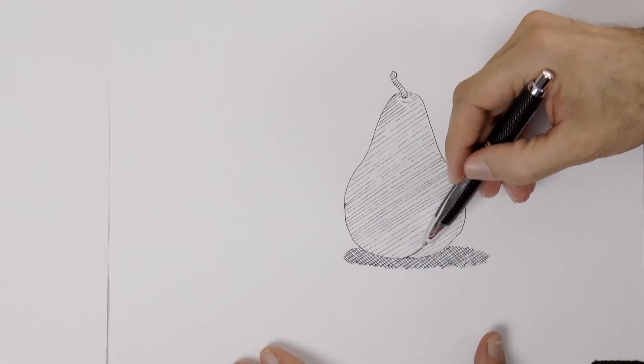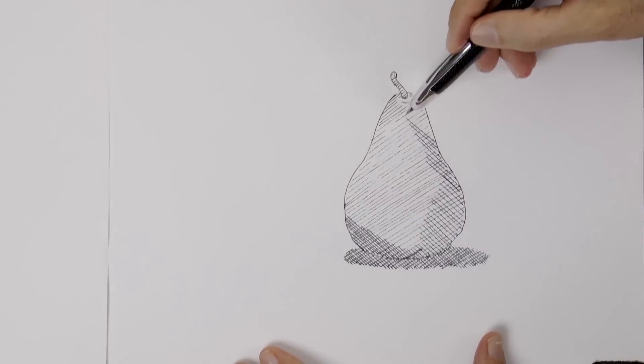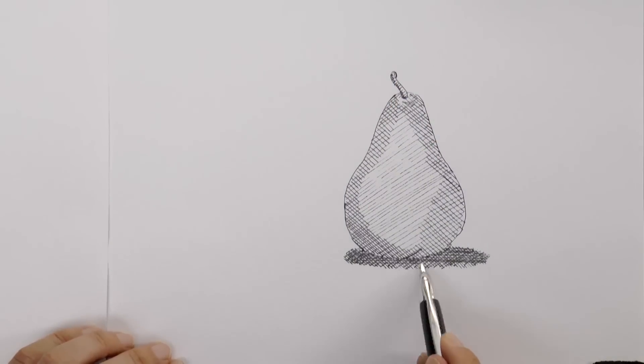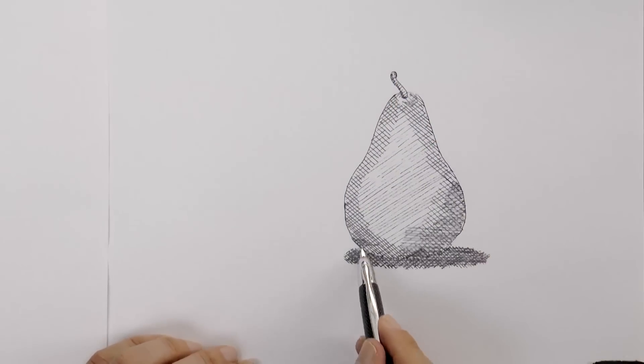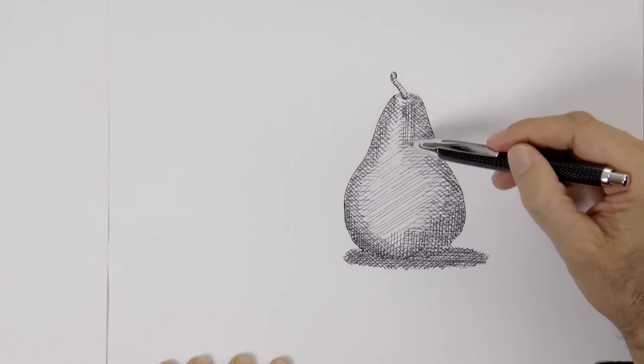I don't do it all over just where I need the shadows to be. Good! The next layer will be horizontal, each time it gets darker and darker. The next pass will be with vertical lines.